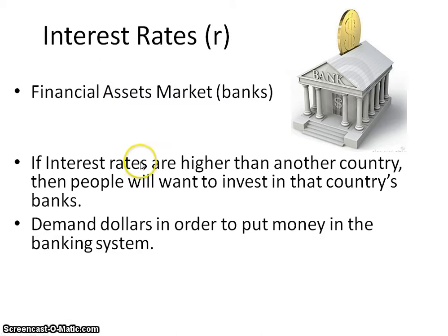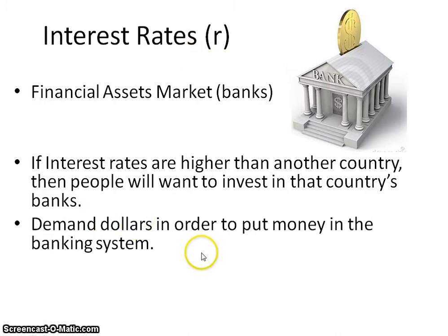The other determinant they'll discuss is the interest rate. When a country has an increase in their interest rate, it relates back to the financial asset market. The demand for dollars will go up if our interest rate has gone up, because that makes it a better place to invest money. This is how it connects to crowding out: with deficit spending, there's an increase in the real interest rate, and other countries will then increase their investment in our financial asset market and demand our dollars.